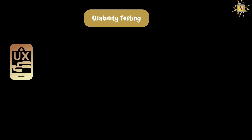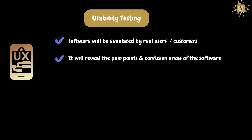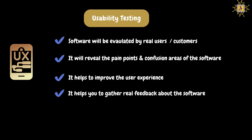Now let's discuss usability testing. Usability testing helps collect actionable details to create a better user experience for the customers of the application. In this testing, the application or software will be evaluated by real users or customers. This testing will reveal the pain points or confusion areas of the software, help identify issues, and improve user experience. It will help you gather real feedback about the software — you don't need to depend on opinions from random people. Users are usually observed by researchers during either an in-person or remote usability testing session.